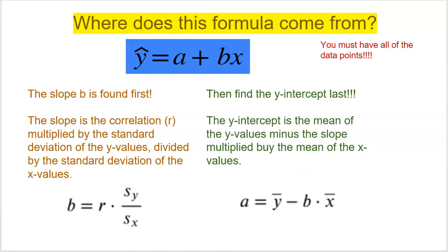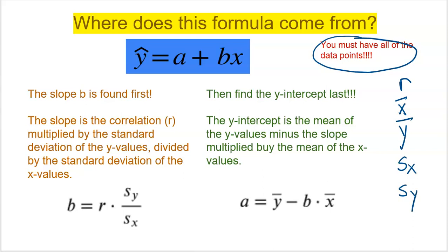Here's the second method: finding A, the y-intercept, and B, the slope, by hand. You need all of your data to calculate R, the average of the x's, the average of the y's, the standard deviation of the x's, and the standard deviation of the y's. Hopefully you'll use a calculator or computer program for those. You do have to find B first, even though it's out of alphabetical order. To find B, you take the correlation R and multiply it by the standard deviation of y divided by the standard deviation of x. If your correlation is positive, your slope will be positive; if it's negative, your slope will be negative — and that makes complete sense.